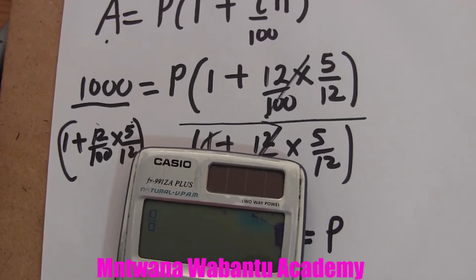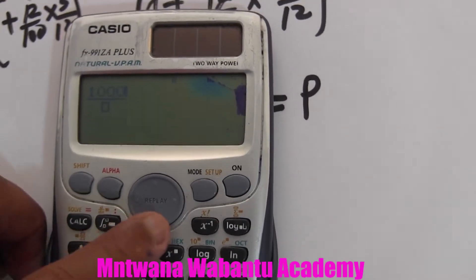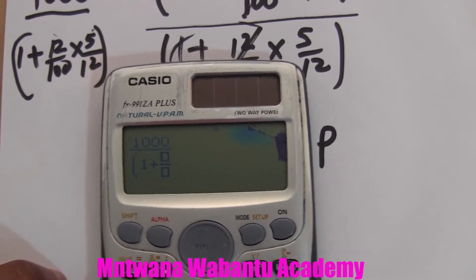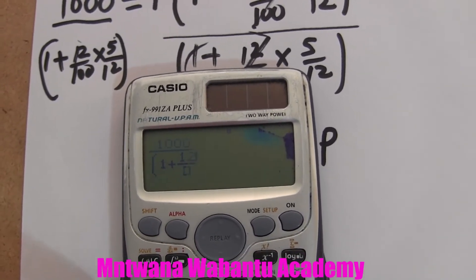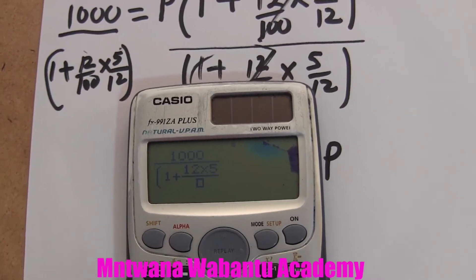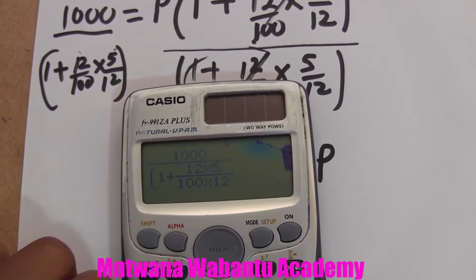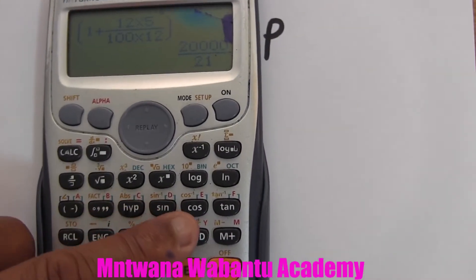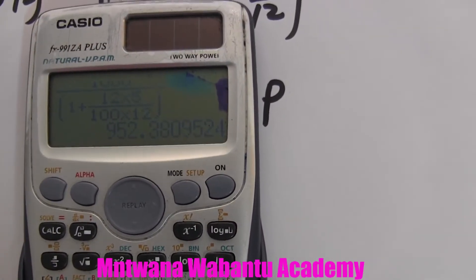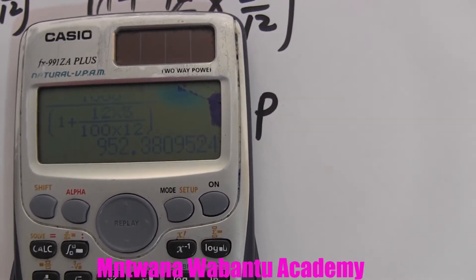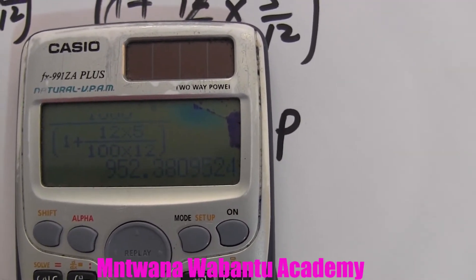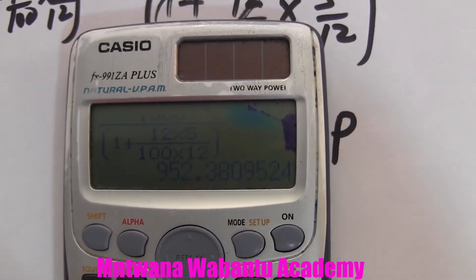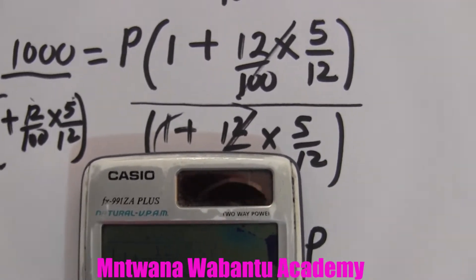On the calculator, use a fraction: 1000 on top, then open a bracket, 1 plus another fraction — 12 times 5 on top, and 100 times 12 on the bottom. Close the bracket and evaluate. Press S-to-D to convert. This gives approximately 952.38.